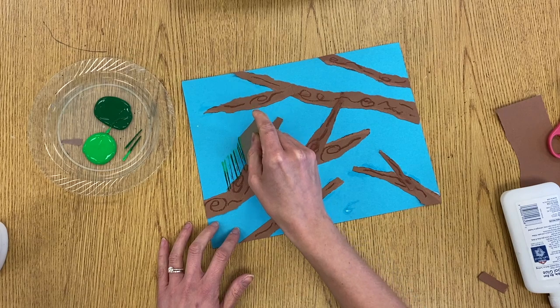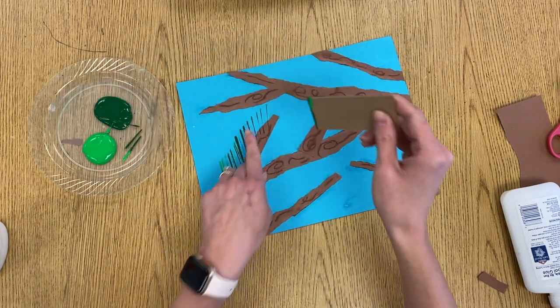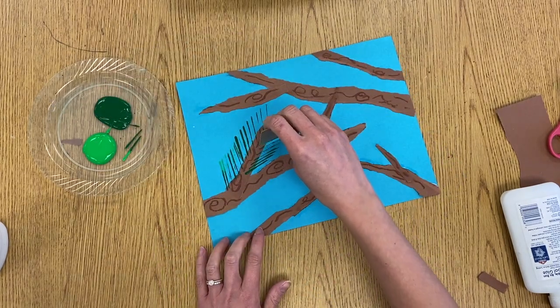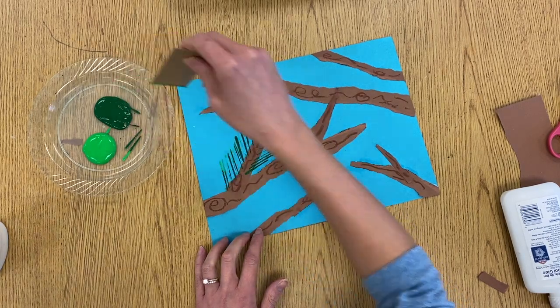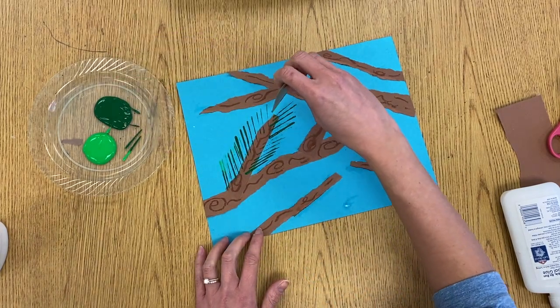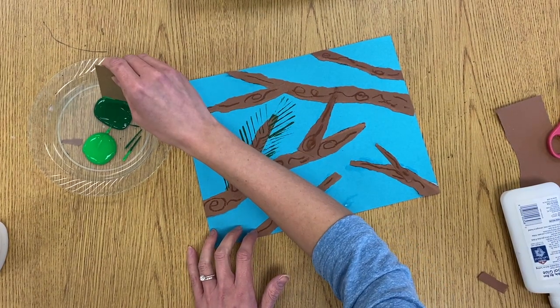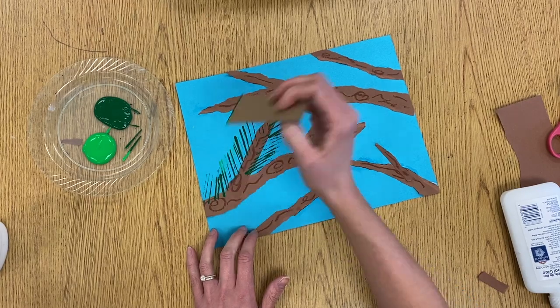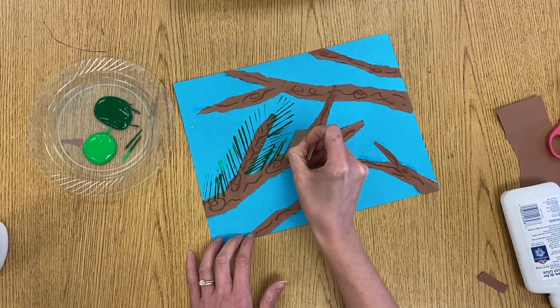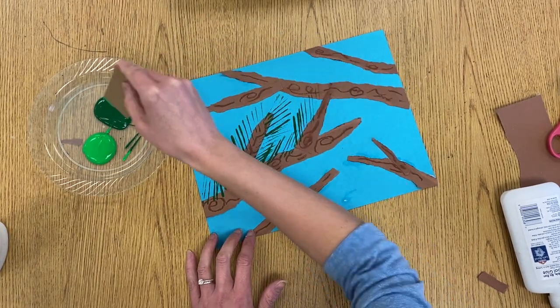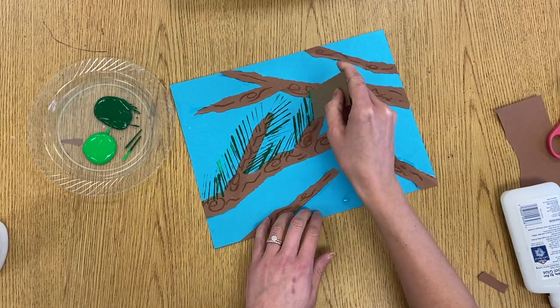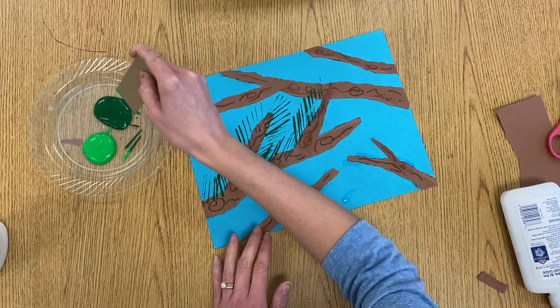And I'm kind of doing like one layer first because these are really far apart and spread out. But I'm going to go back in and add some more to make it look more full, like a real evergreen tree. So on every branch, I'm adding those diagonal lines. And here my branches are overlapping. So I'm going to overlap my pine needles as well.